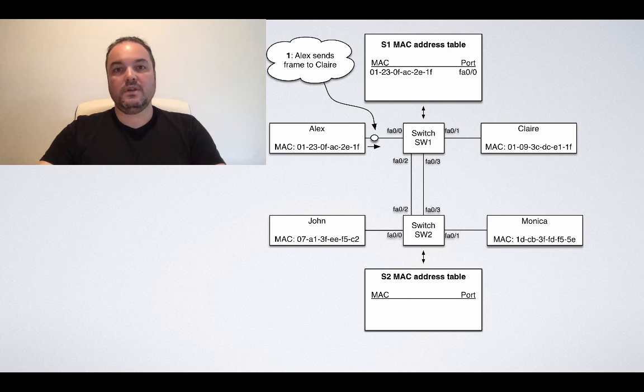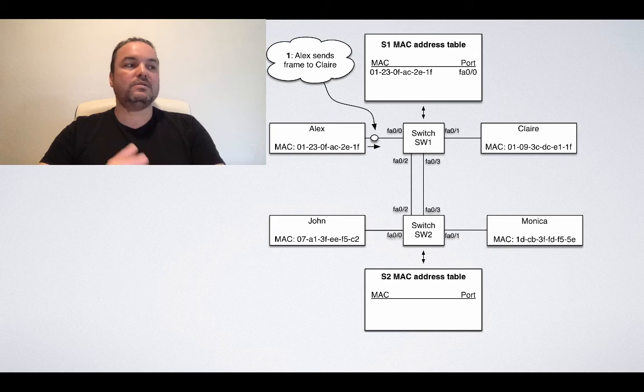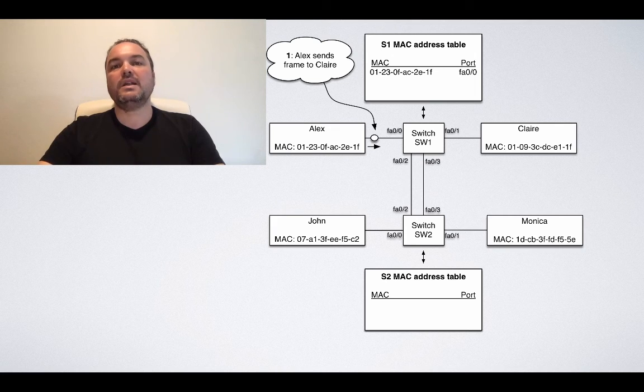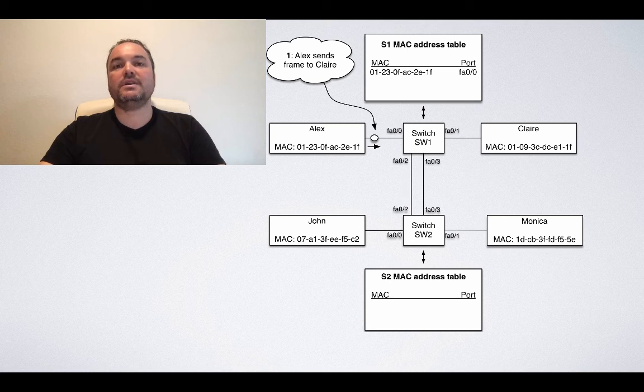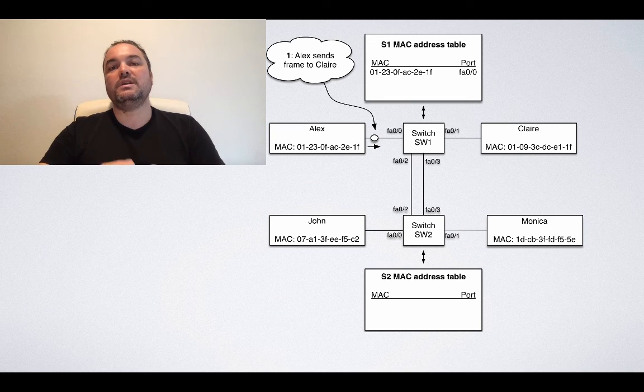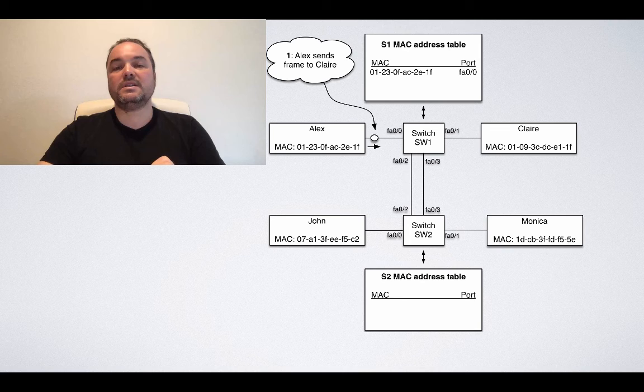Now let's suppose that Alex sends a frame that needs to go to Claire. The first time Alex sends a frame to Claire, S1, the switch S1, learns about Alex. So it saves its MAC address in the MAC address table. At this point, SW1 knows about the Alex server host. It knows its MAC address and it also knows that it connects into port FA00 on SW1.